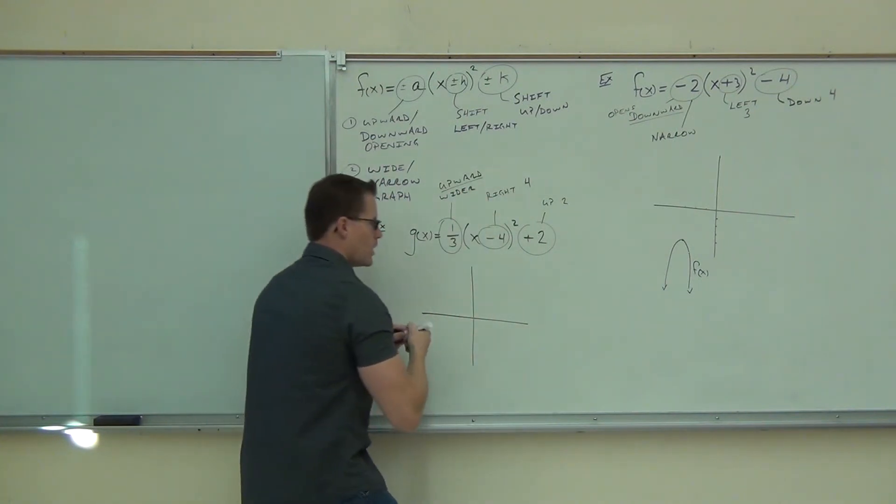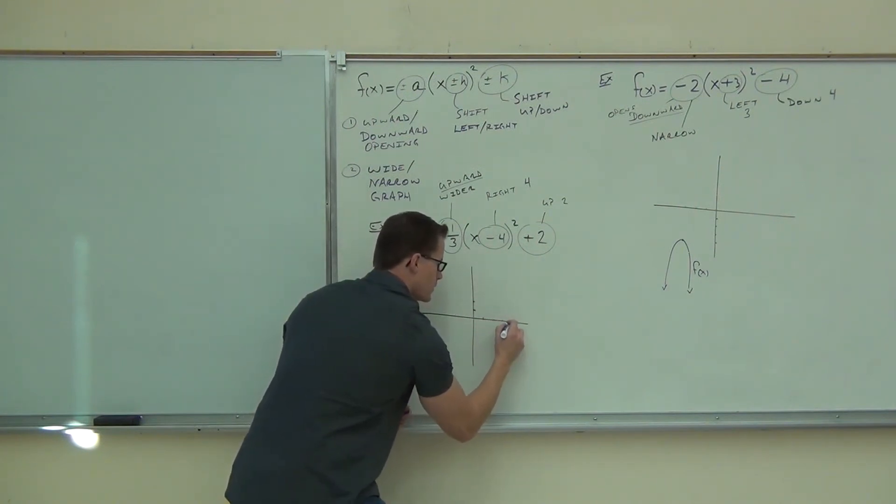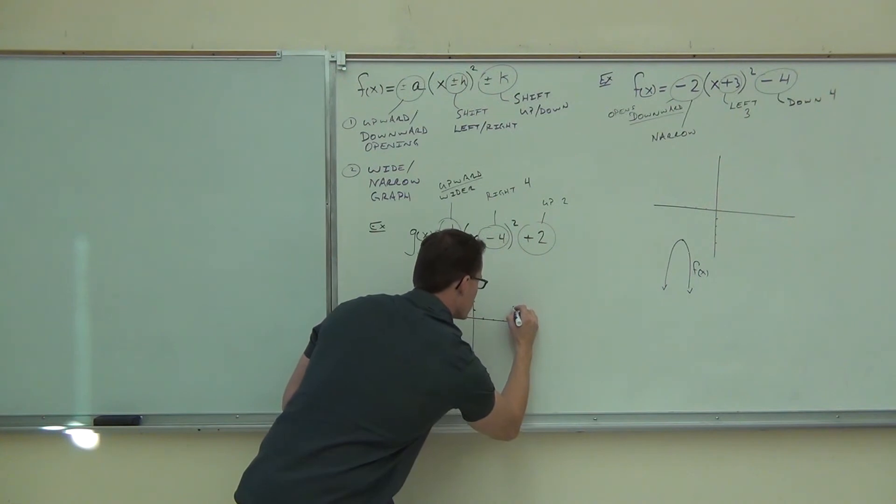So, from our origin, we're going to go up two spots. We were from right to left. Up two spots. We're going to go to the right. Four spots. We'll put a little dot there.